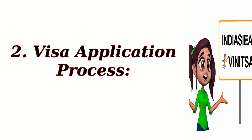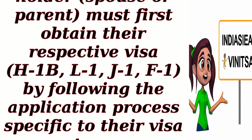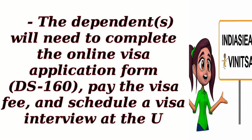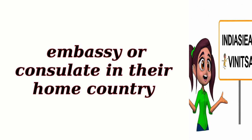Visa Application Process: The primary visa holder — spouse or parent — must first obtain their respective visa (H-1B, L-1, J-1, or F-1) by following the application process specific to their visa category. Once the primary visa holder receives approval, the dependents can apply for the corresponding dependent visa. The dependents will need to complete the online visa application form DS-160, pay the visa fee, and schedule a visa interview at the U.S. Embassy or consulate in their home country.